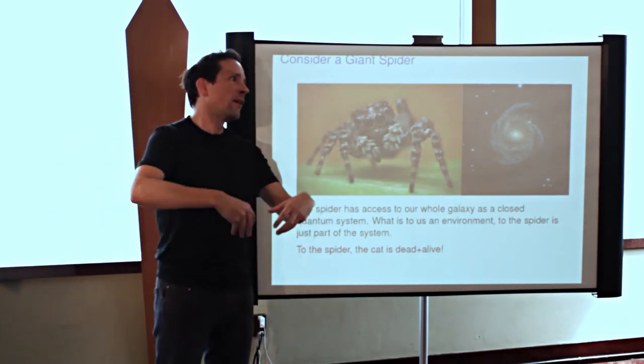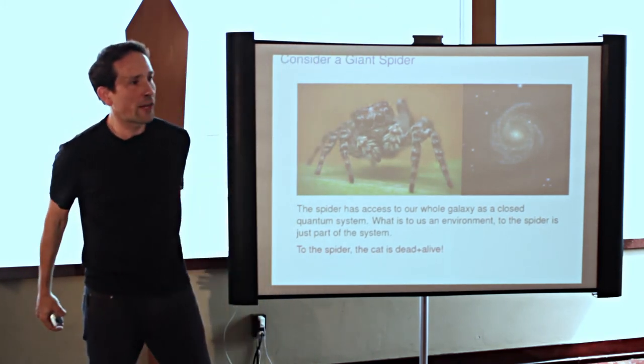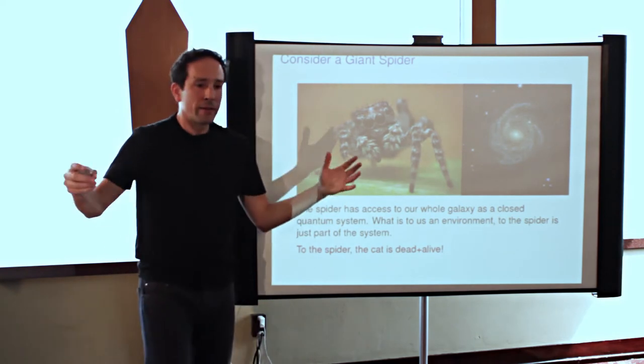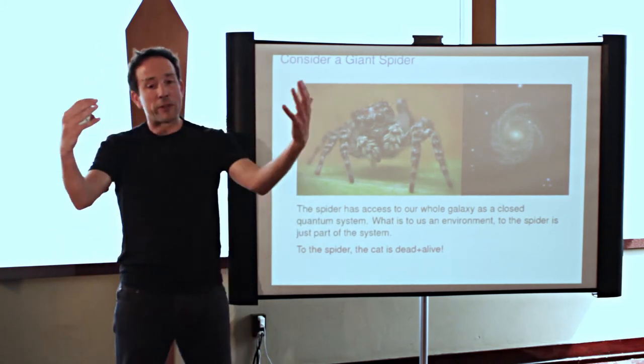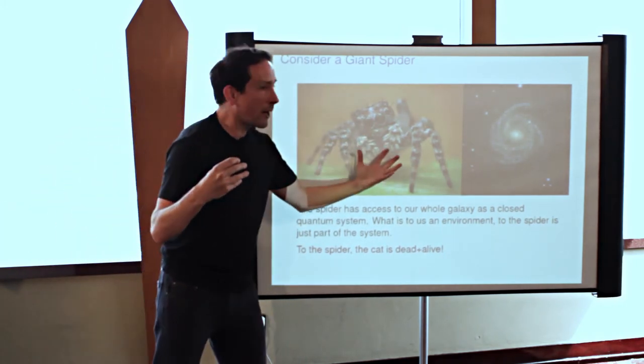One in which the cat is dead, and people are crying on Earth, and there are certain light particles bouncing off of the Earth and into space that would have bounced differently had the spider been alive. And another state where the spider actually is alive and all those particles are moving differently. That's what the spider sees.